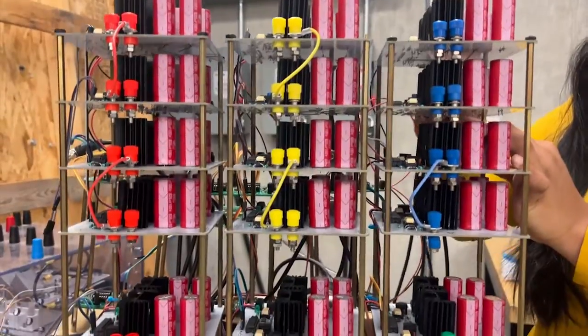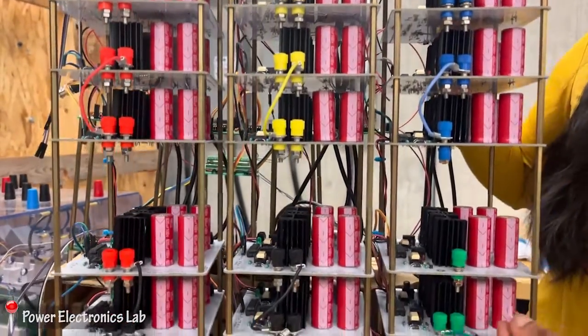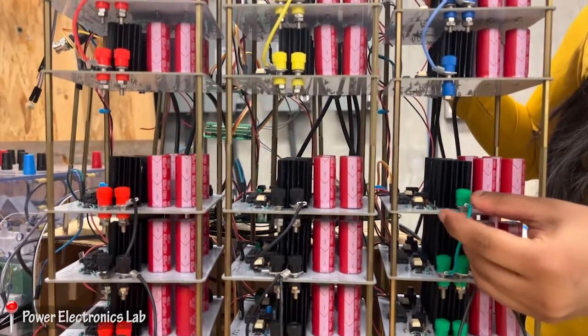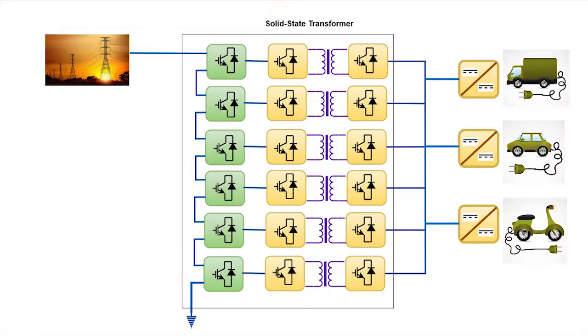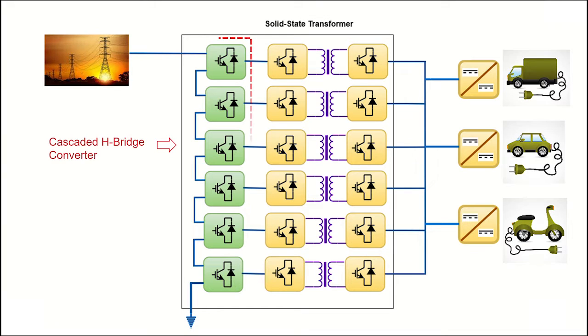High-power solid-state transformers are modular in nature to reduce the voltage stress on power electronic switches. This is the basic configuration of SST-based charging station. First, the medium voltage AC is converted to DC using a cascaded H-bridge converter.